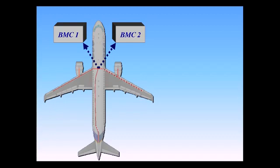Should number two bleed monitoring computer fail, number one will take over all its functions, except for the pylon. Should number one fail, number two will protect all but the number one pylon and the APU.